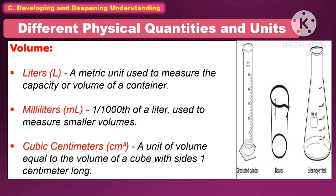Another physical quantity is volume. For units, we use liters, milliliters, and cubic centimeters. Liters is a metric unit used to measure the capacity or volume of a container. Milliliters is 1 out of 1,000 of a liter, used to measure smaller volumes. Cubic centimeters is a unit of volume equal to the volume of a cube with sides 1 centimeter long.